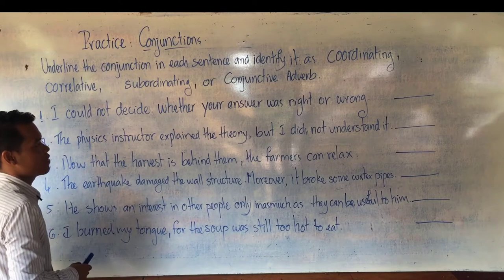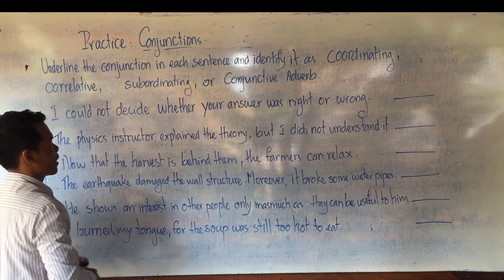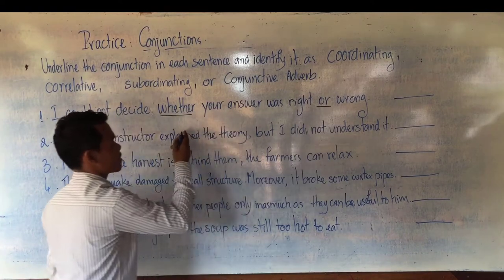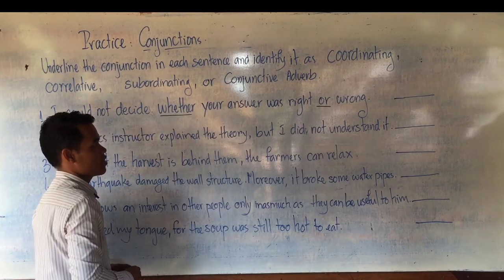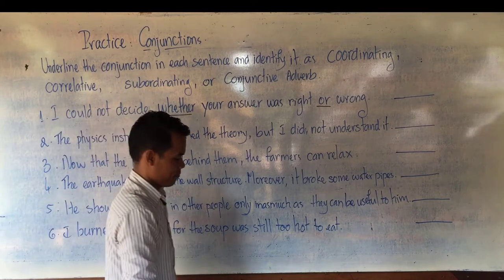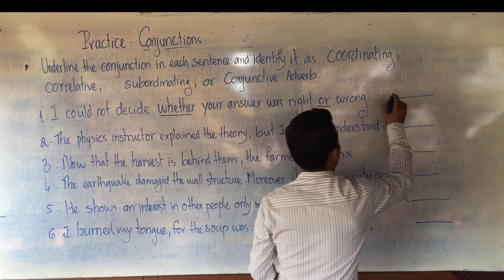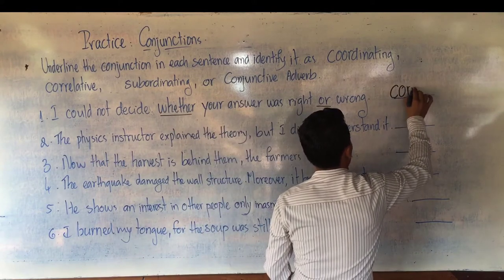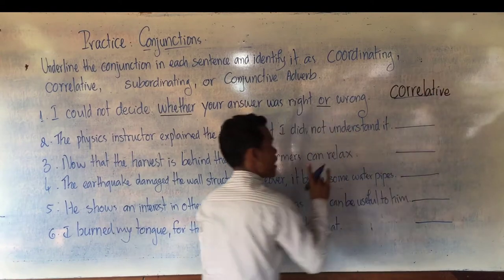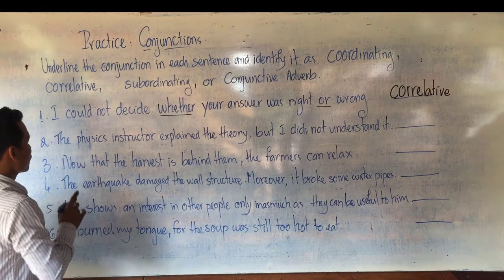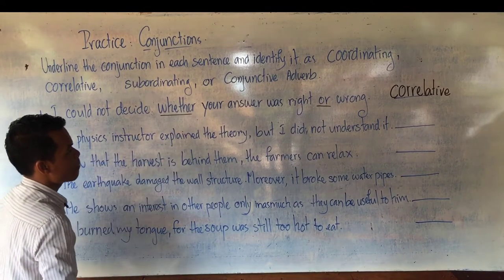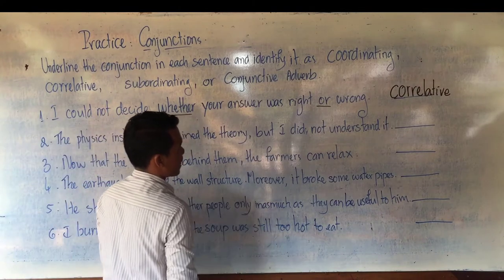Number one: 'I could not decide whether your answer was right or wrong.' Which is the conjunction? 'Whether...or' — what type of conjunction is it? When you have 'whether...or' like this, it is a correlative conjunction — a pair conjunction.